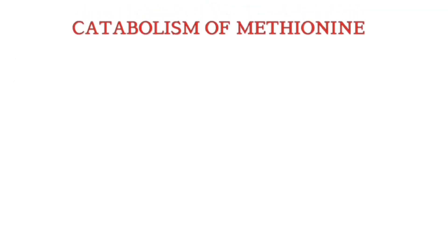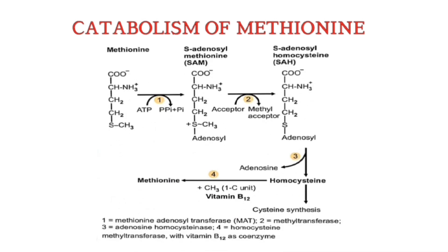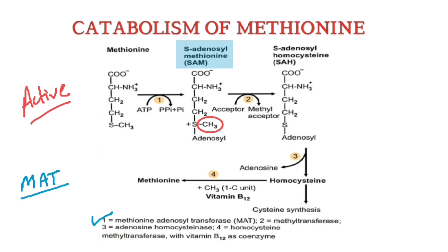Now we will see catabolism of methionine, or you can say activation of methionine. This process of activating methionine involves its conversion to S-adenosylmethionine, which is the active form and serves as the primary methyl donor in the body. The enzyme involved is methionine adenosyl transferase, MAT, with ATP donating the adenosyl group.